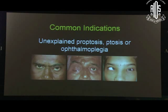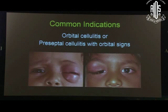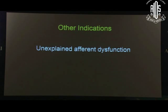The indications for CT scan and MRI are: unexplained proptosis, ptosis or ophthalmoplegia — these are common indications. Followed by a palpable orbital mass where you want to know the posterior extent of the lesion. Any patient with orbital cellulitis or preseptal cellulitis with early orbital signs is also an indication. Orbital trauma with proptosis or with enophthalmos, because you want to know if there is an orbital fracture. And unexplained afferent pupil dysfunction.